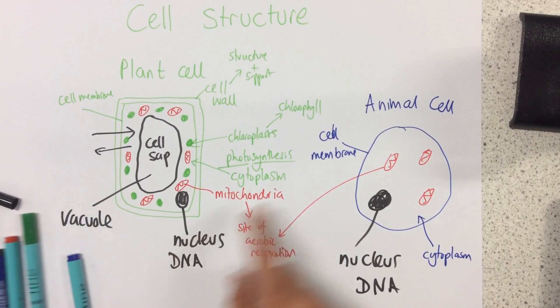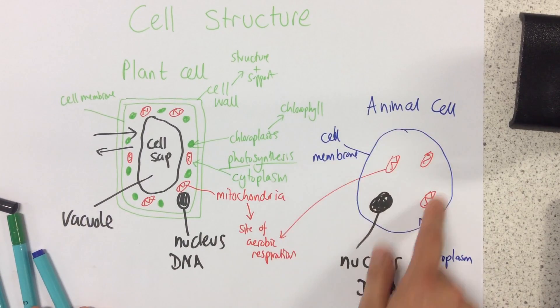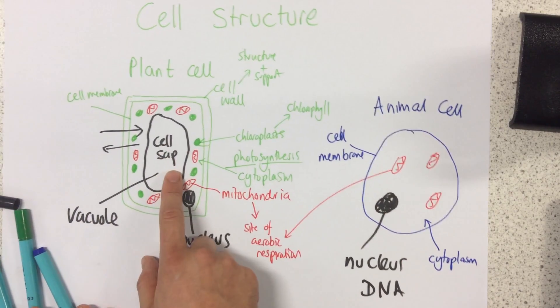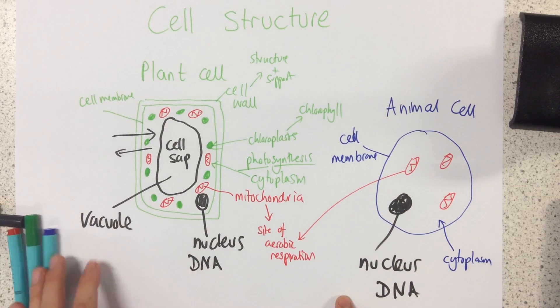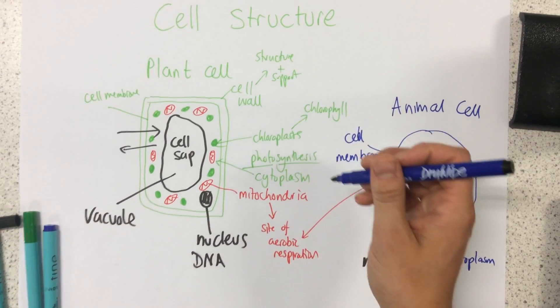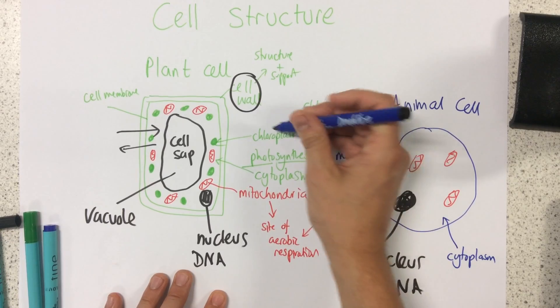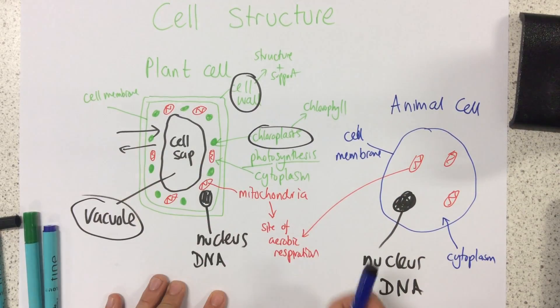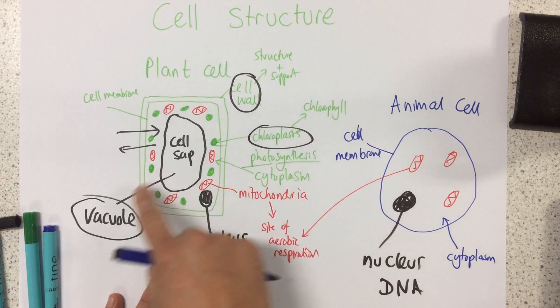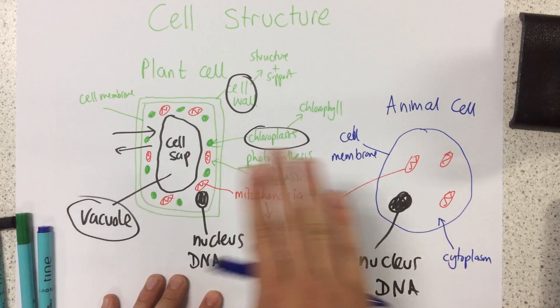So we can see there's not actually anything that an animal cell has that a plant cell doesn't have. However there's a few things that a plant cell has that an animal cell doesn't have. For example a plant cell has a cell wall, chloroplasts and a vacuole. All of these three things animal cells do not have.